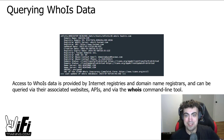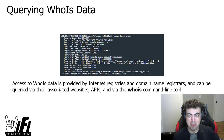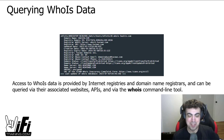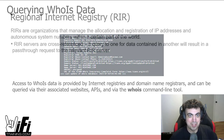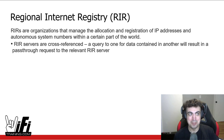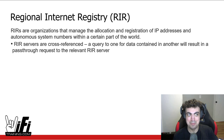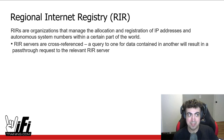Access to WHOIS data is provided by internet registries and domain name registrars. The data can be queried not just with the WHOIS command line tool, but through the associated websites and APIs of these registrars and registries — which can actually be more flexible, even if it feels less elite than the command line.